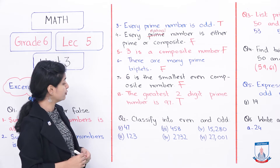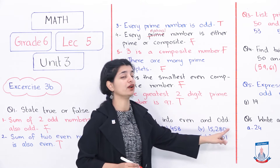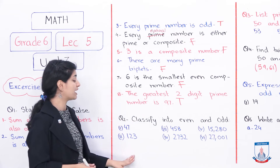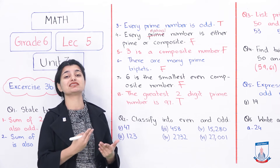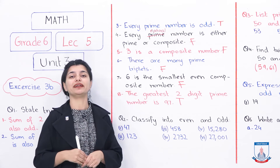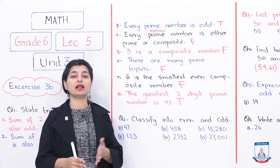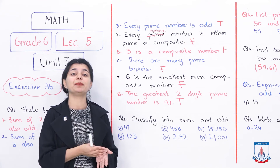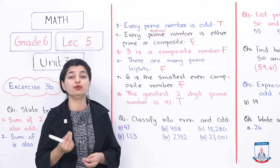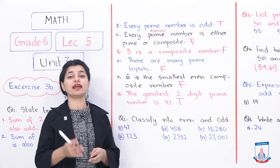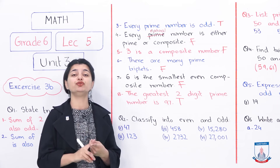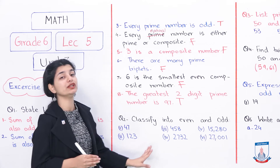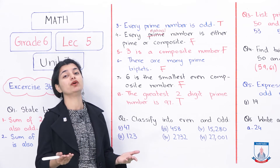Now let's look at question 2: classify numbers into even and odd. Even numbers are divisible by 2, odd numbers are not. Using the divisibility rule, if the last digit is 0, 2, 4, 6, or 8, the number is even. Otherwise, it is odd.